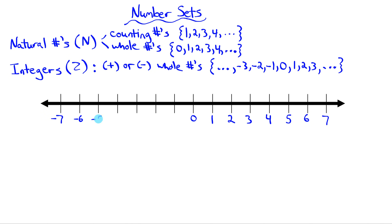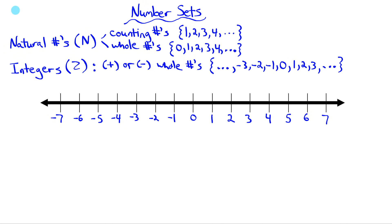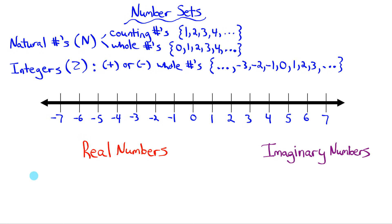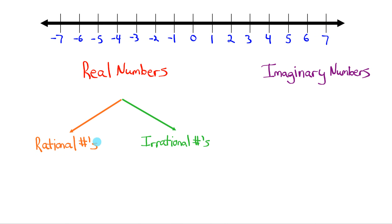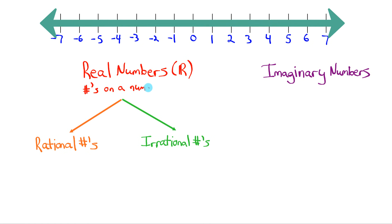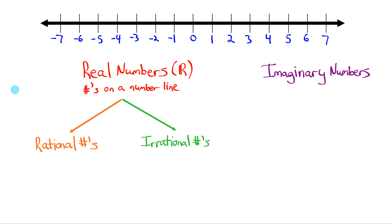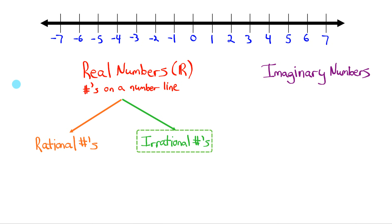What we're going to move on to next are the differences between real numbers and imaginary numbers. After we understand the difference between those two, we will further subdivide real numbers into two categories. Real numbers could be things called rational numbers or irrational numbers. The symbol for real numbers is an R, and real numbers are basically any number that could fall anywhere on a number line.